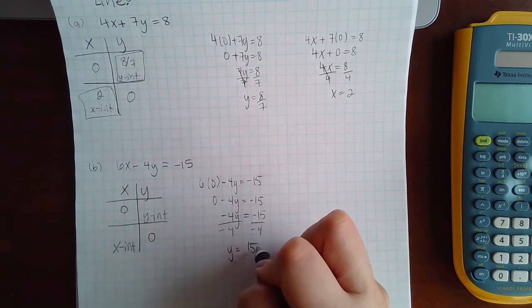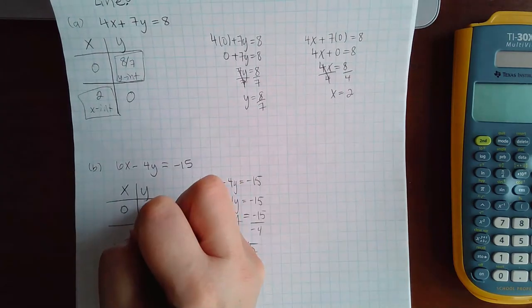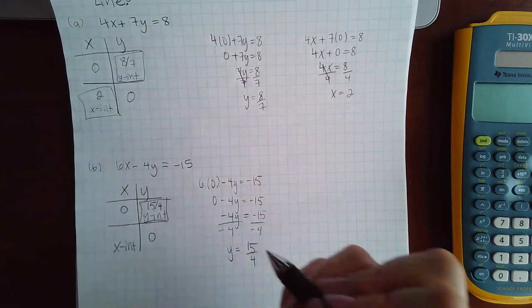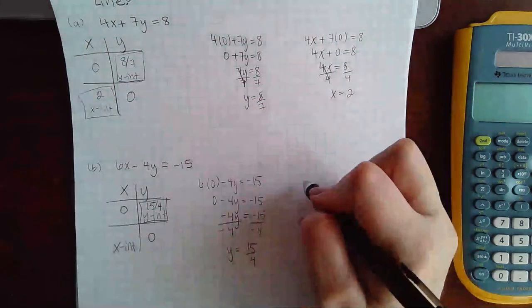Which gives me a positive 15 over four, and that is my y intercept.